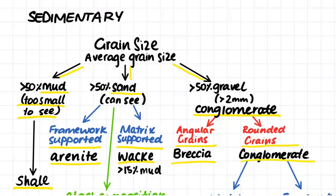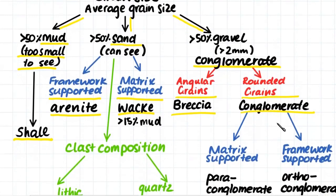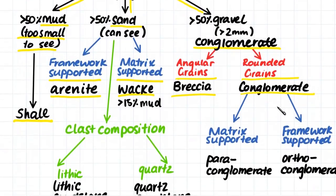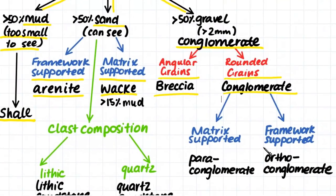Then, like we did for the sandstone, we can look at the supporting matrix of the conglomerate to classify it further. A conglomerate which is matrix supported is called a paraconglomerate, and a conglomerate that is framework supported, so where the clasts sit on top of each other and are all touching, is called an orthoconglomerate.